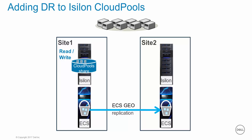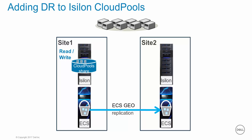Data archived to ECS by Cloud Pools is only accessible through the Isilon cluster, which contains mappings to the cloud data within SmartLink files. The data cannot be accessed directly from the ECS system. As a result, it is important to not only ensure resiliency of the data stored in the ECS system but also the SmartLink files.